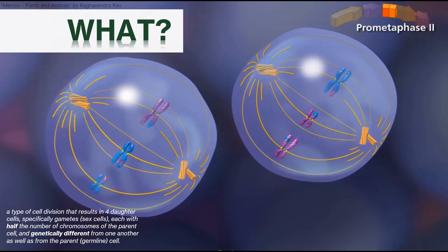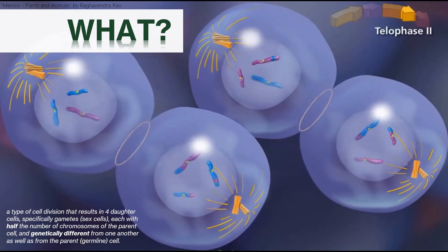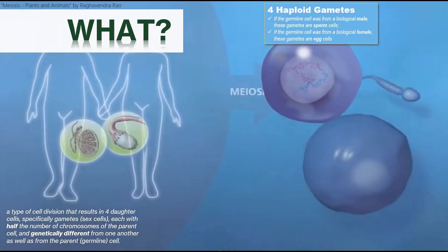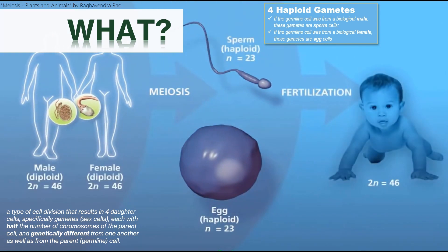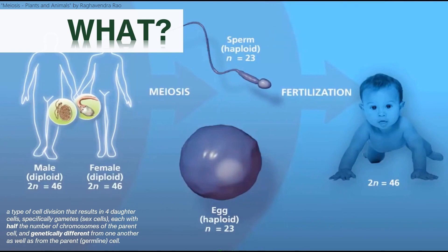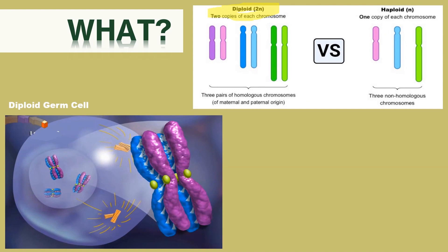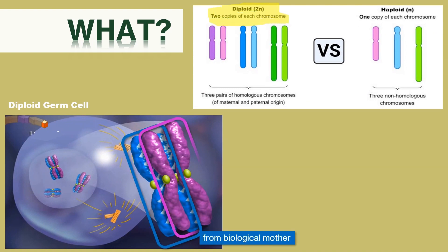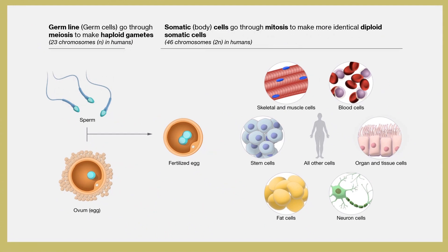More specifically, we are looking at germ cells. Germ cells are specialized cells that are destined to undergo meiosis to produce gametes — sperm and eggs in animals, or pollen and ovules in plants. These germ cells are diploid, meaning they contain two sets of chromosomes, one set inherited from each biological parent. This contrasts with somatic cells, which make up the rest of the body and are involved in forming tissues and organs. Germ cells are there to form gametes through the process of meiosis.